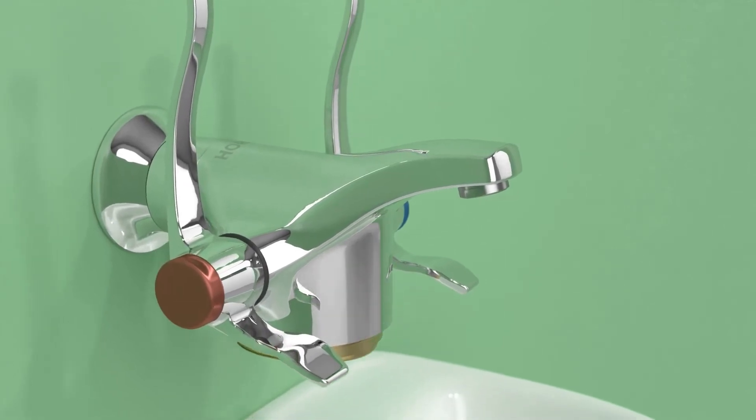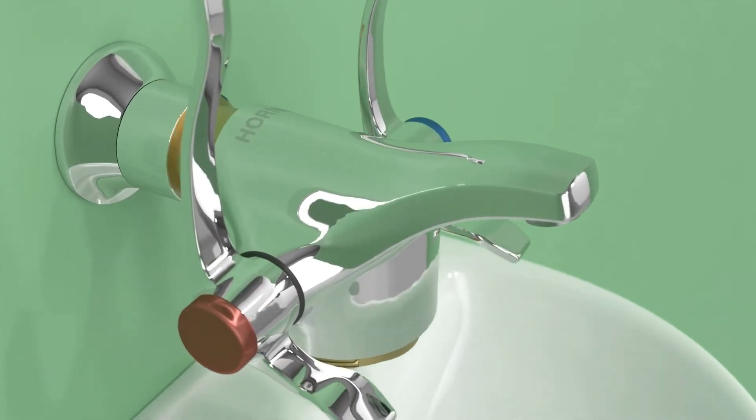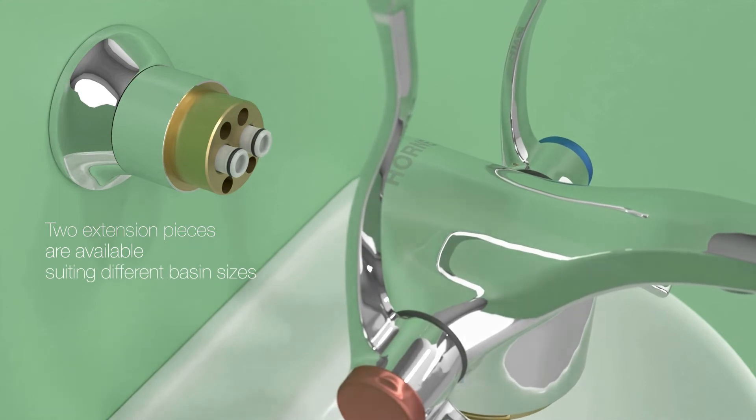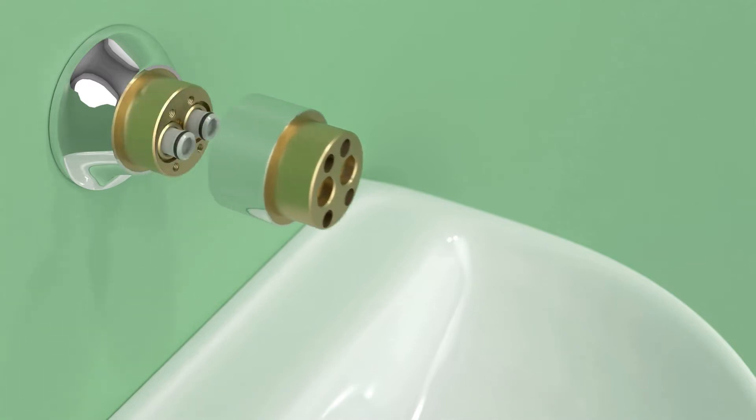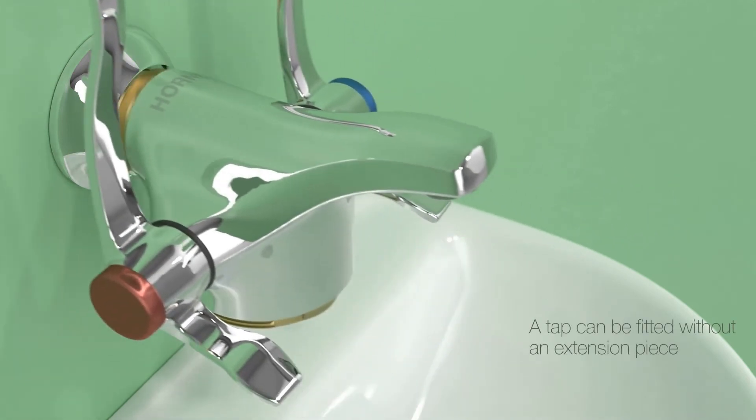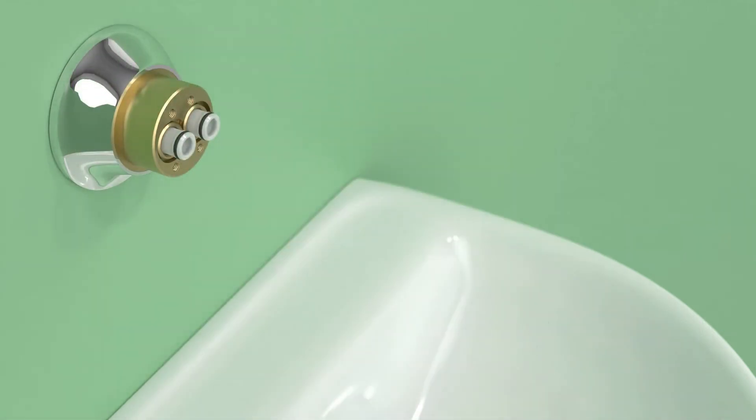Two alternative extension pieces are available to correctly position the tap to accommodate for a range of basin sizes. Unscrew the four M5 screws and washers to release the existing extension piece from the spigot. A tap can be installed without an extension piece.